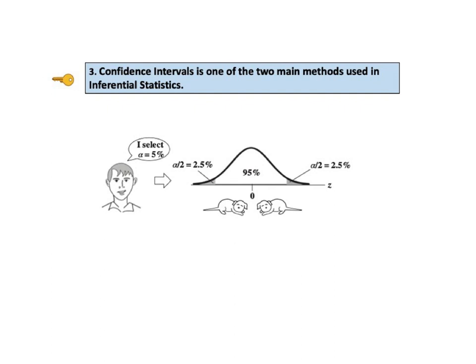Key to understanding number 3 says: confidence intervals is one of the two main methods used in inferential statistics. Earlier we gave an example of an interval estimate: the mean height of adult males in the population is 175 centimeters plus or minus 5 centimeters. This plus or minus amount is called the margin of error. Our inferential statistical analysis concluded that the true population mean is somewhere in the interval of 170 to 180 centimeters with a 95% level of confidence. That interval is a confidence interval.